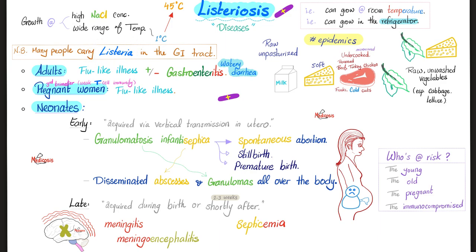Many people carry Listeria naturally in their GI tract — this is called asymptomatic carriage. Listeriosis is one of the causes of food-borne epidemics and food poisoning in the community. Why? Because people drink unpasteurized raw milk, soft cheese made from raw unpasteurized milk, undercooked or microwaved processed or non-processed food — especially beef, turkey, chicken, and cold cuts — because Listeria can survive in the refrigerator. Restaurants store lots of vegetables, especially cabbage and lettuce, for a long time in their refrigerators — and that's exactly the problem.